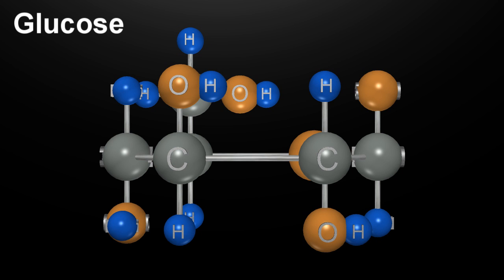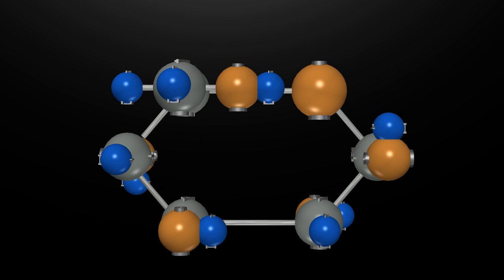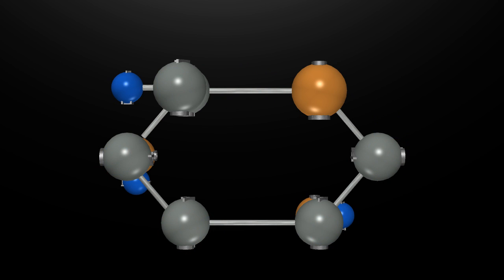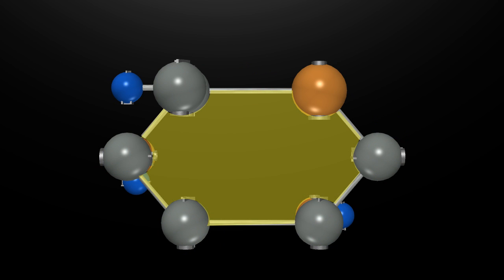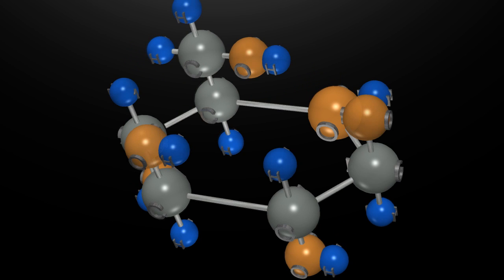You'll see that the glucose molecule is made up of the same basic three elements. It has a carbon backbone, which is organized into this hexagon. One of the carbons is actually substituted for an oxygen in the hexagon, and the remaining carbons and hydrogens and oxygens kind of dangle off of that hexagonal base.